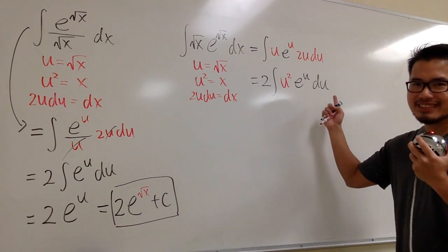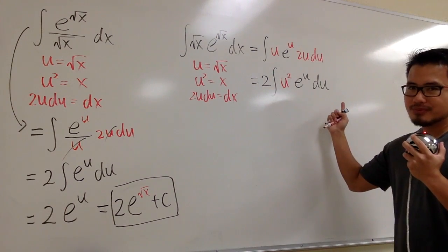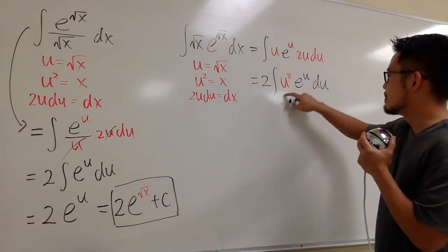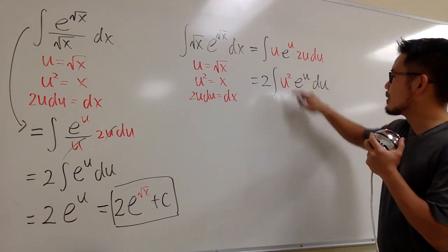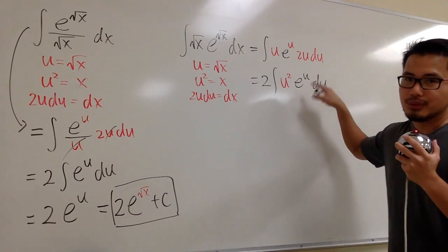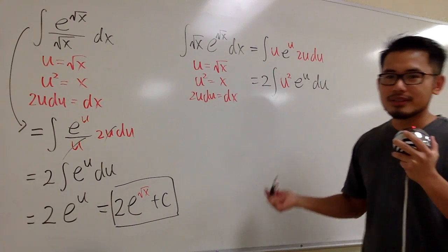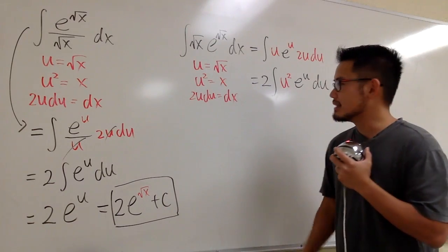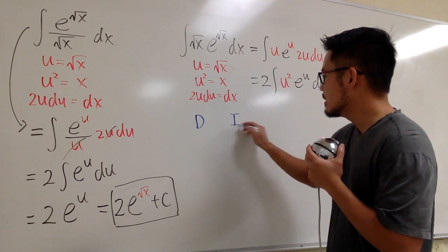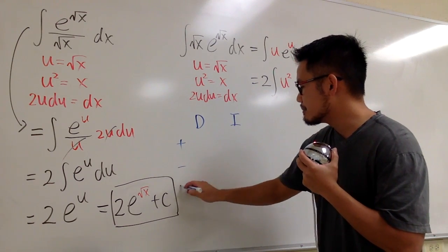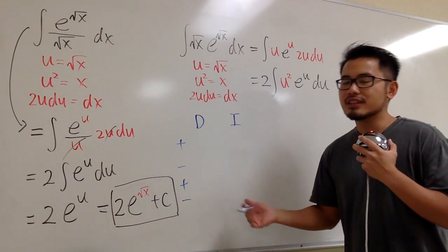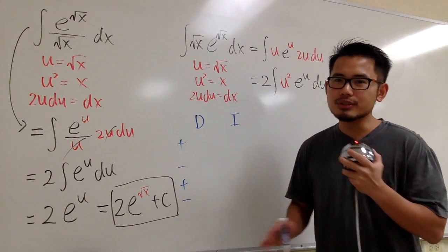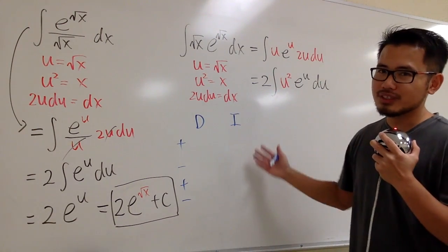Can we do this? Yes — in the u world this is doable with integration by parts. We have a polynomial, u squared, times e to the u, so integration by parts works nicely. Let me show you with the DI method — I'll write this in blue. If you want to check out the DI method, I have a link in the description below with all the examples and everything you need to know about integration by parts using the DI method.